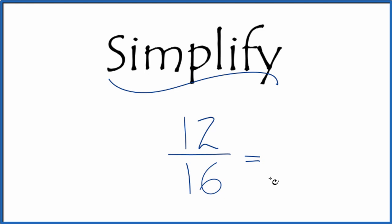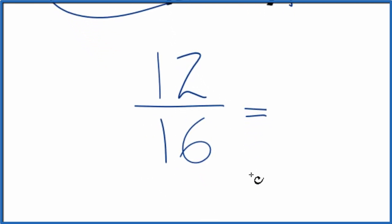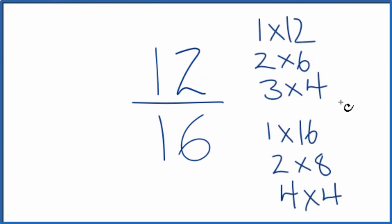Let's start by listing the factors of 12 and 16. So these are the factors here for 12 and then for 16. I see the greatest common factor, the one in common that's the largest, is 4.